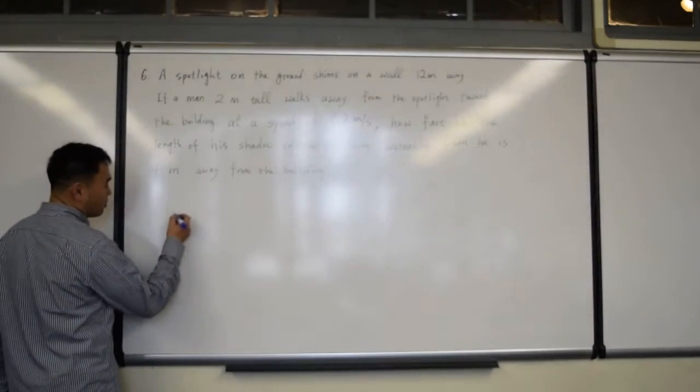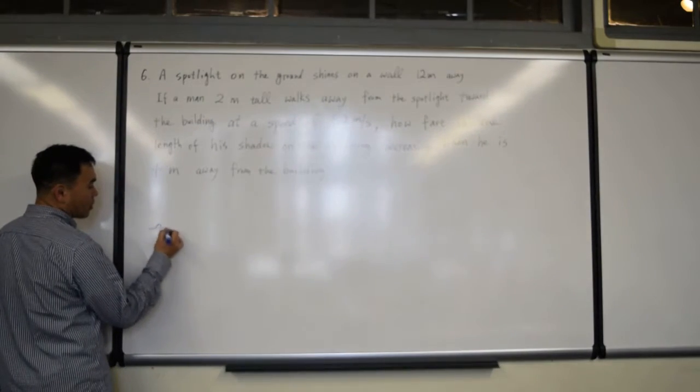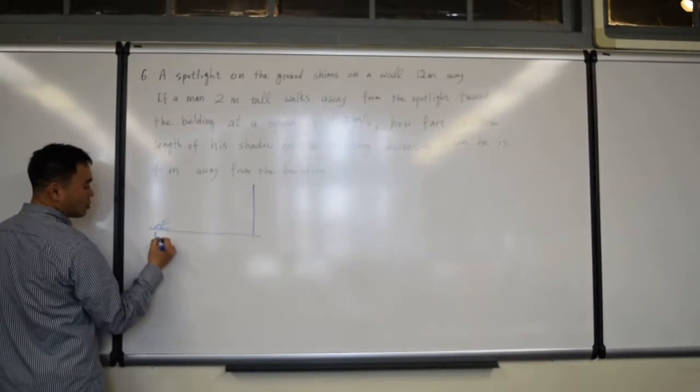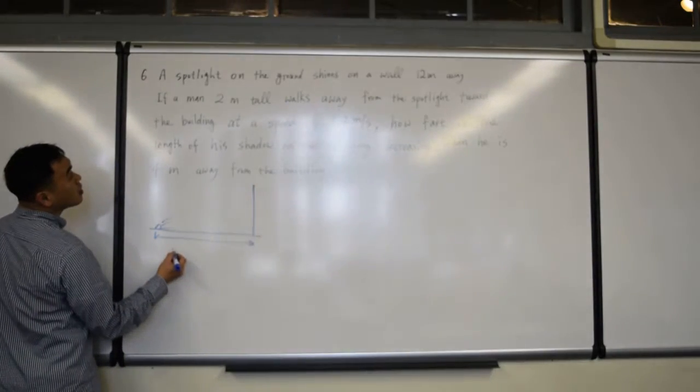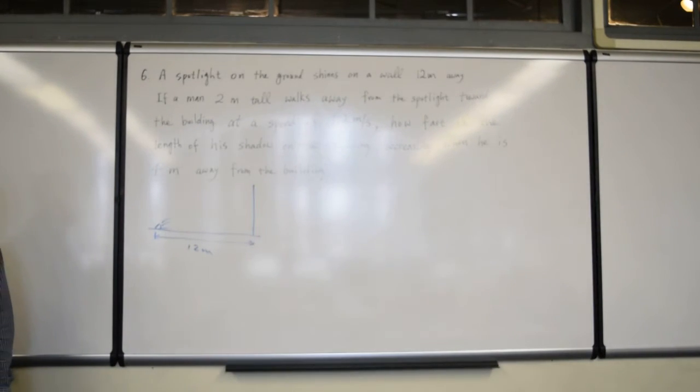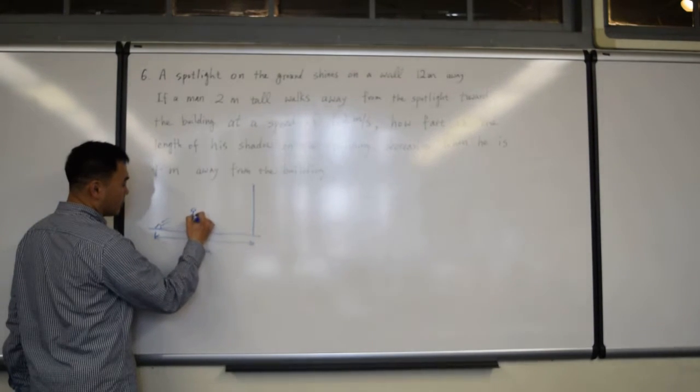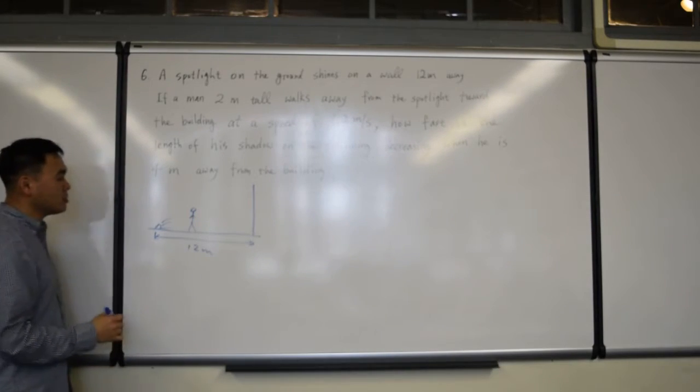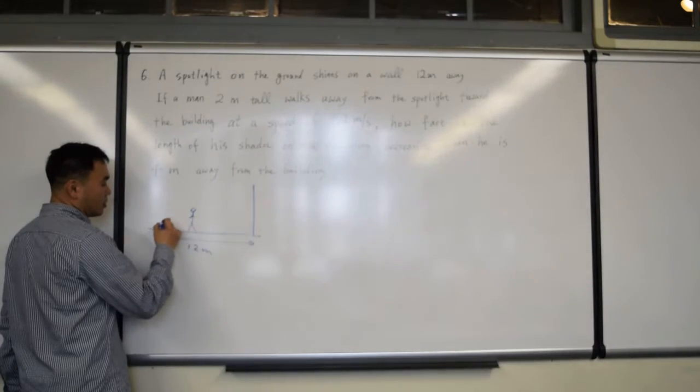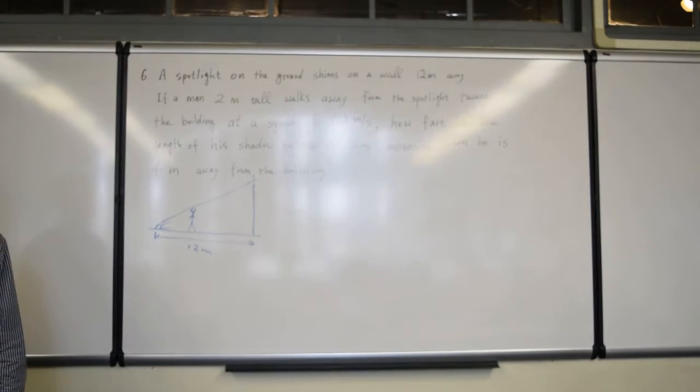So let's try to draw this picture. You have a spotlight on the ground shining, and here's the building. The distance between the spotlight to the building is 12 meters, and that doesn't change. And then here's a guy, 2 meters tall. And when he's here, the spotlight will shine on him and give a gigantic-looking shadow.